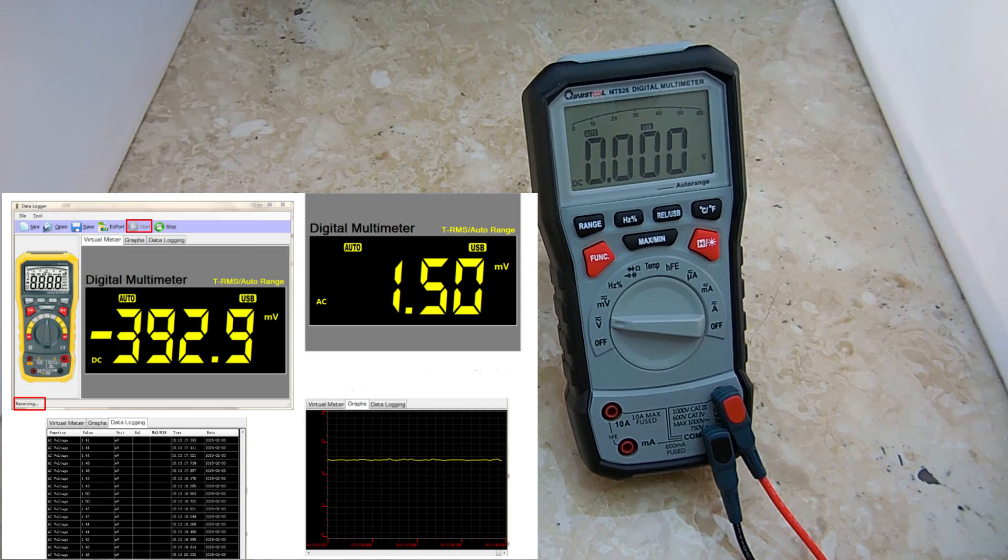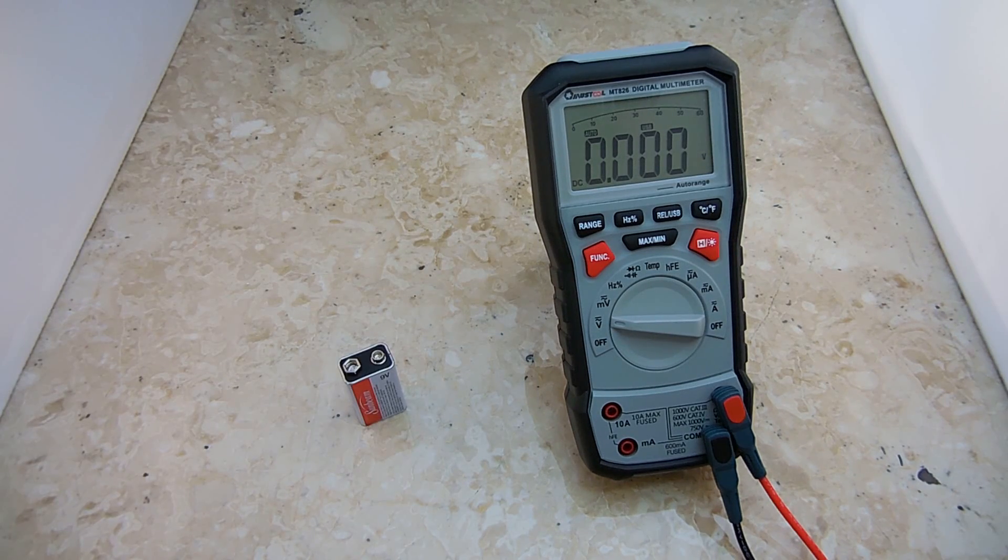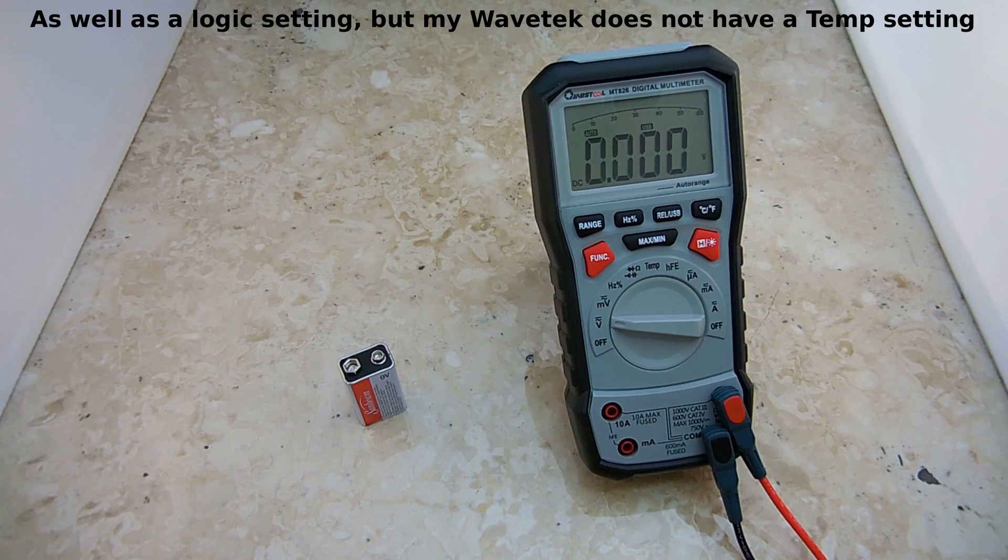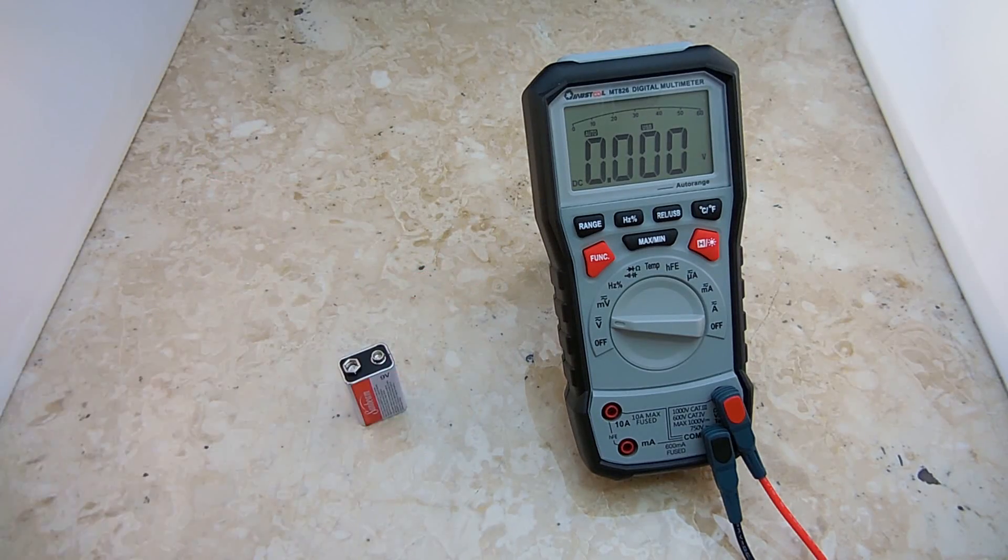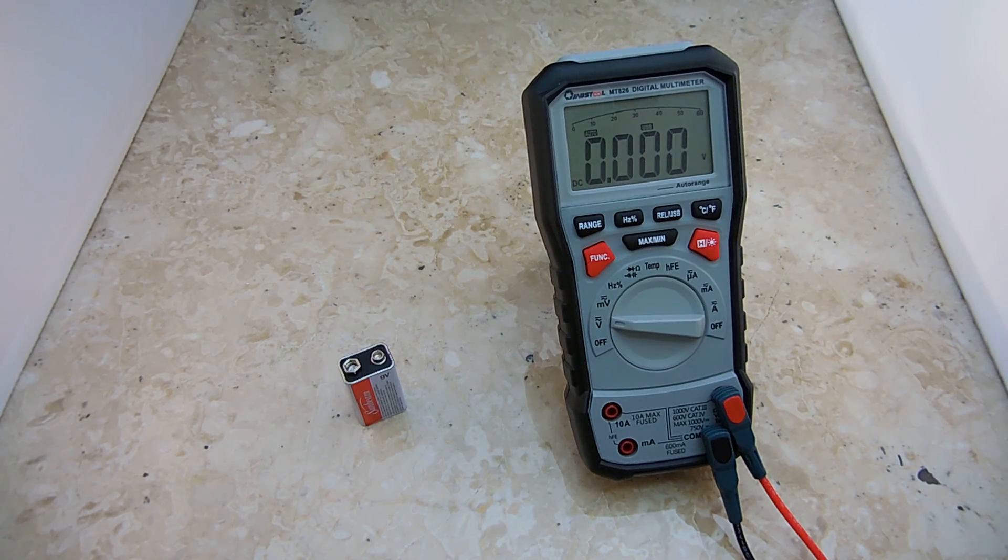This digital meter is only lacking one function that my Wavetech 27XT has and that's an inductance setting. If you would like that capability, you can purchase this unit along with another inexpensive meter for measuring inductance. Keep in mind for all the features of this meter and everything that's included, I do not think you're going to find a better meter for under $50.